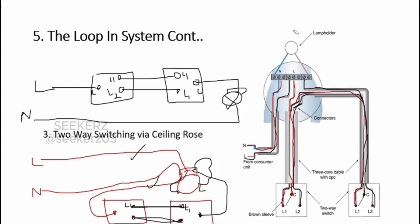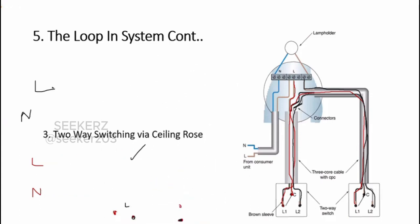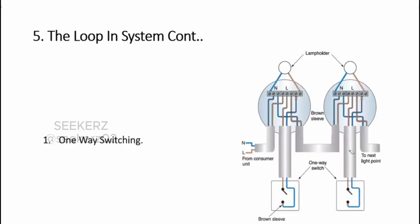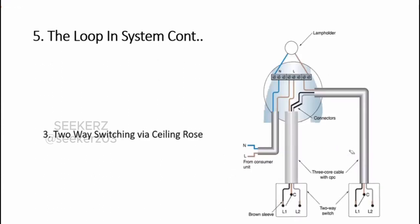If you use an intermediate switch, you can first draw a sketch of the intermediate switch and then design how to connect all the two-way switches, the intermediate switch, the lamp holder, and the ceiling rose yourself. If you know the basics of this looping system and the wiring connection joints, you can add the ceiling rose and switch points for any kind of lighting system using this fundamental knowledge.